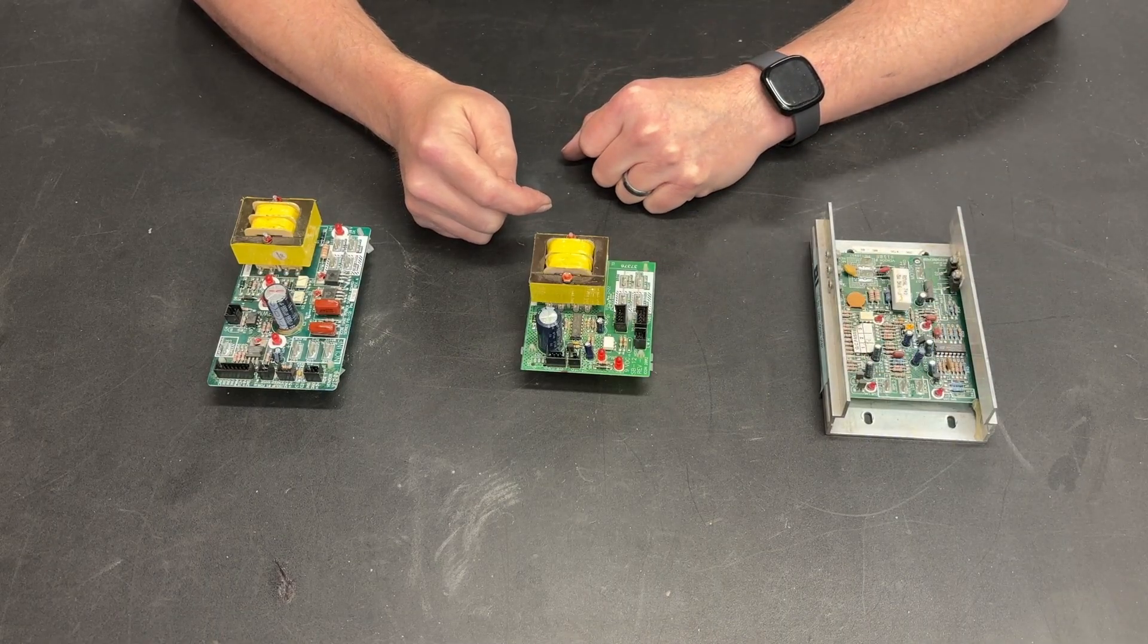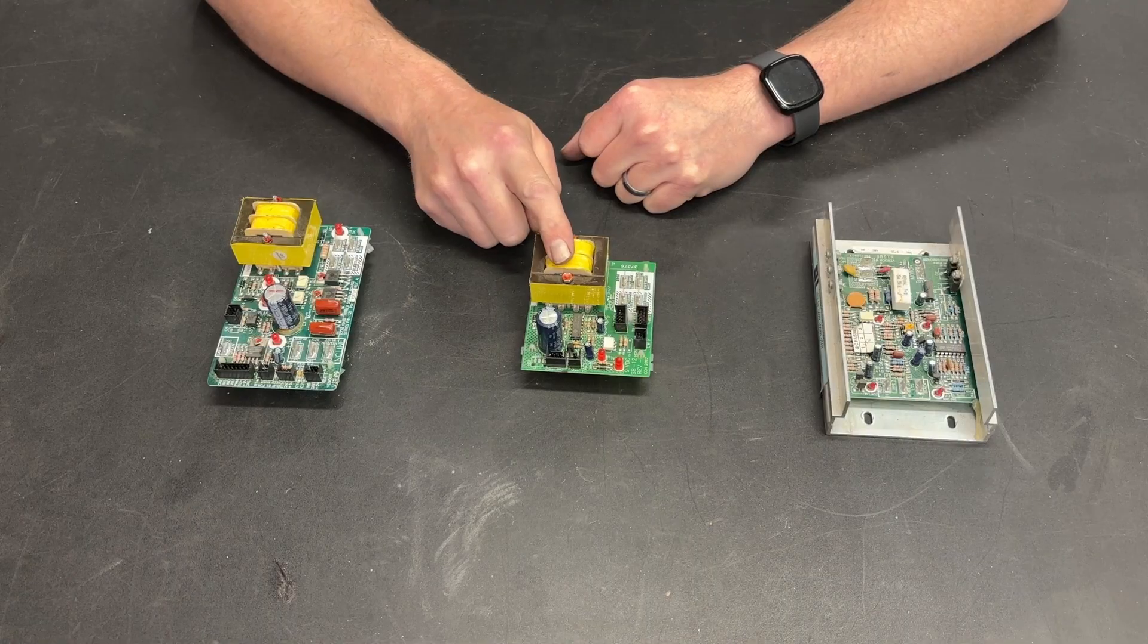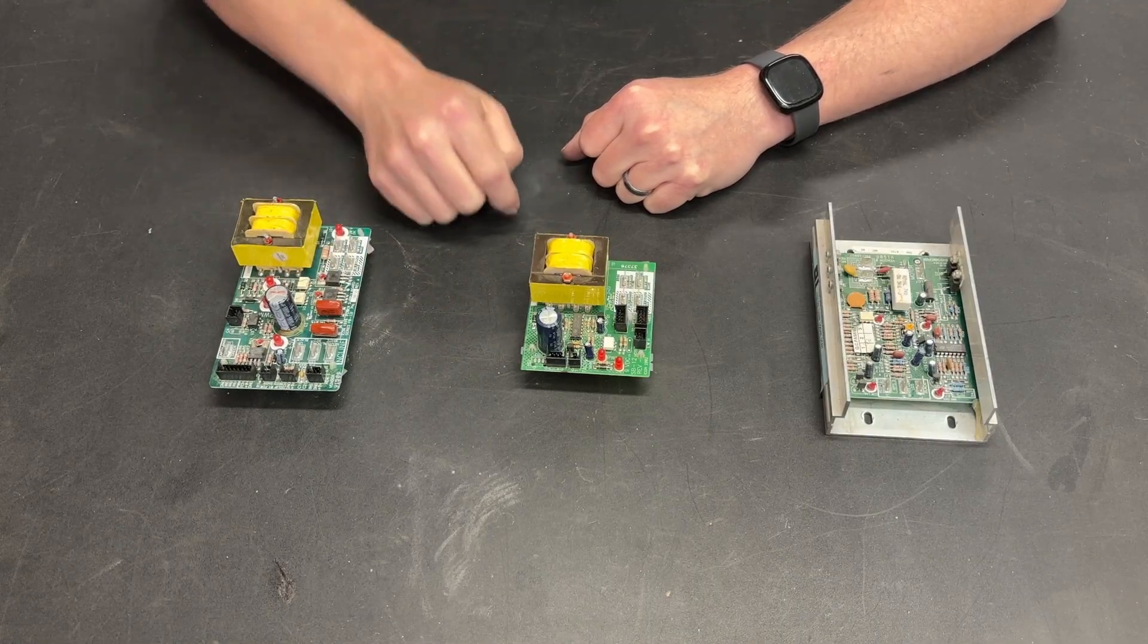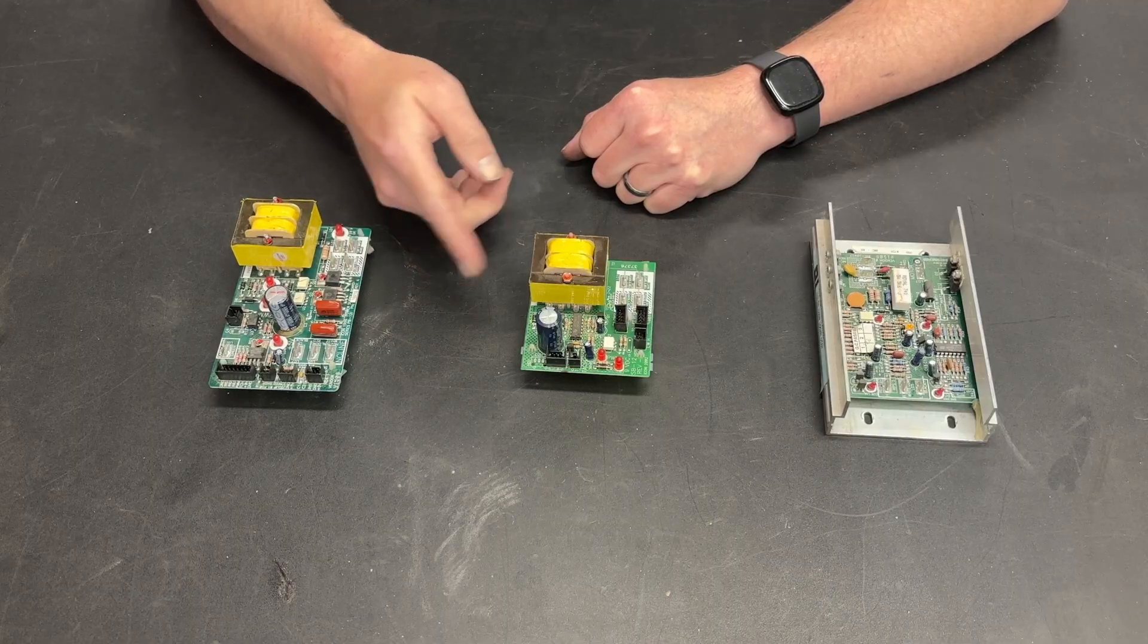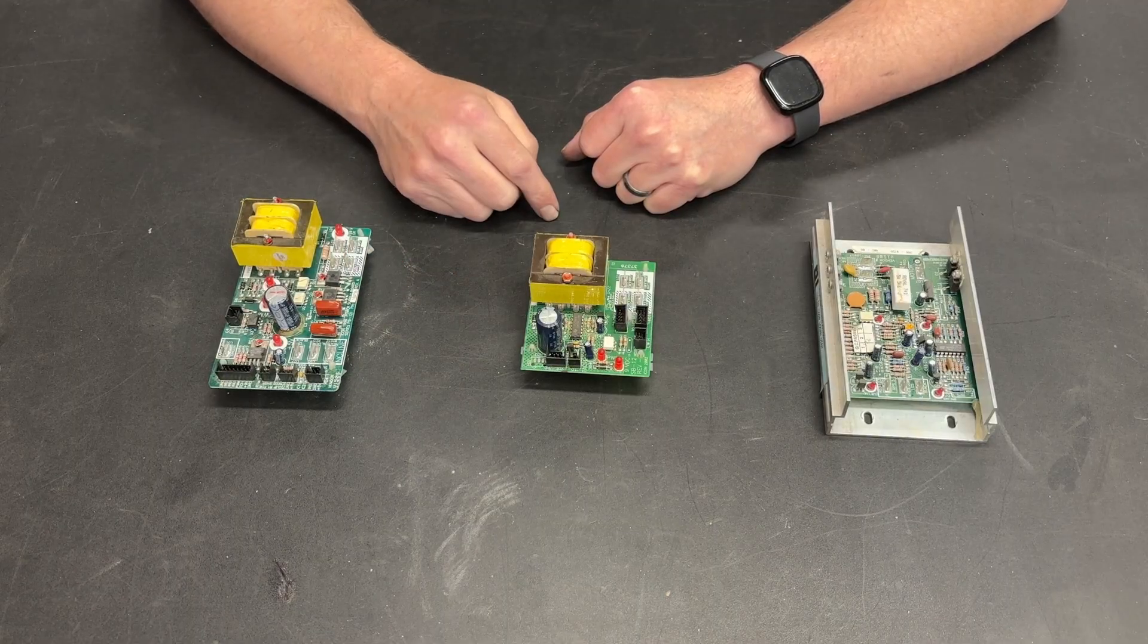But what about the other components inside the treadmill? This guy right here, this guy right here. Functionally these are basically the same. What do they do and what other uses do we have for them? Let's find out.